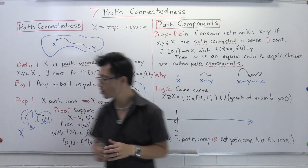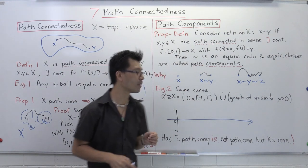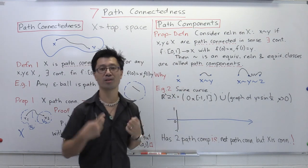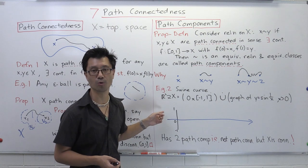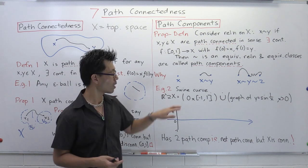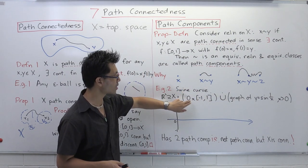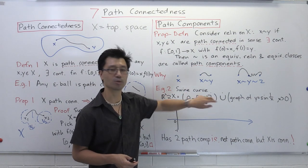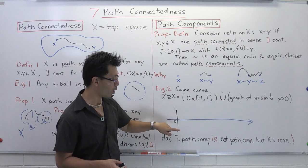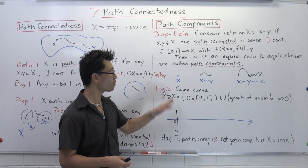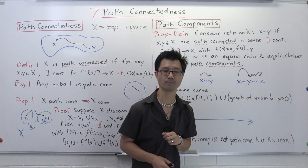This next example shows the reverse implication doesn't hold. It goes by the name of the swine curve, or topologist's sine curve. This is a subset of ℝ² with its Euclidean topology. It's the disjoint union of two things: first, x = 0 crossed with the closed interval [−1, 1] — that's the vertical segment at x = 0. Second, the graph of y = sin(1/x) for x positive.